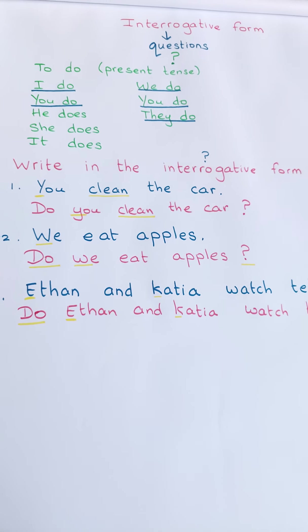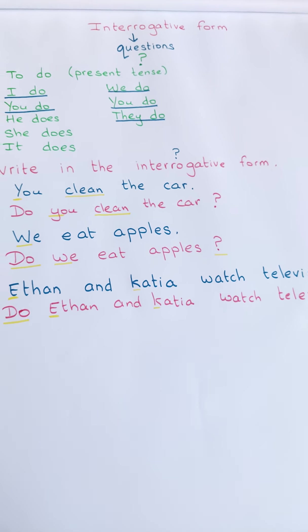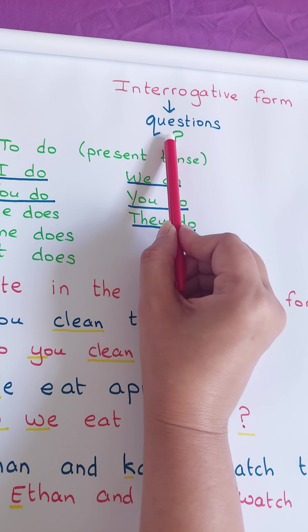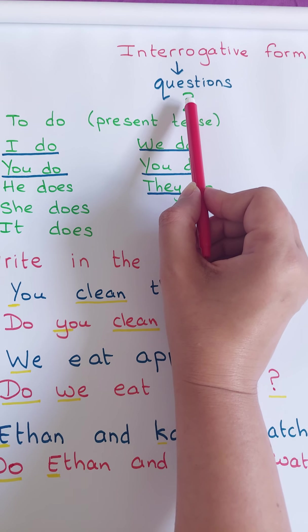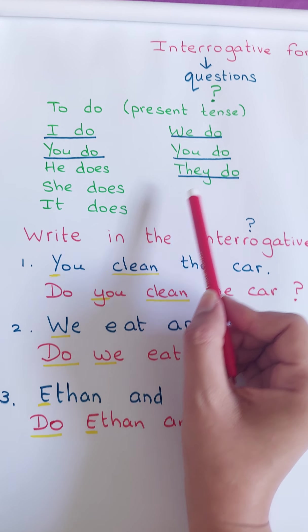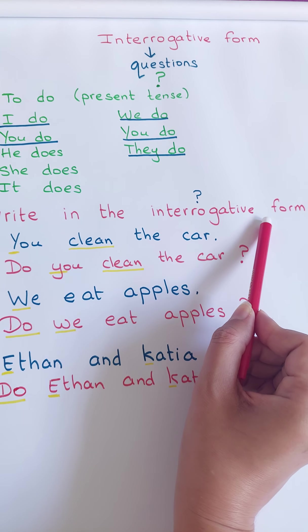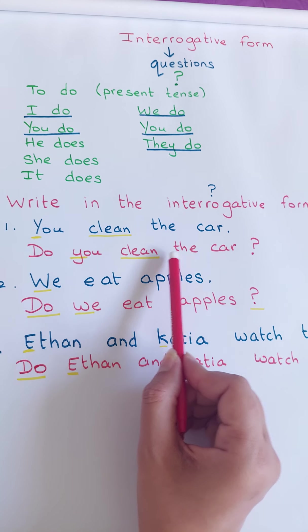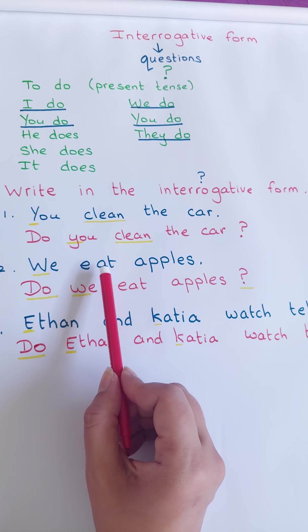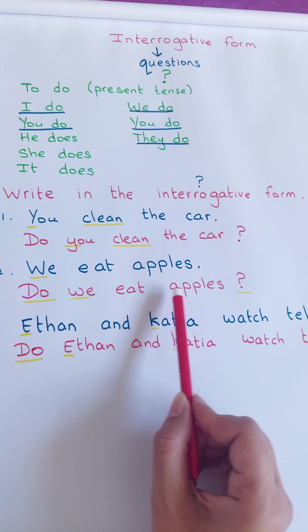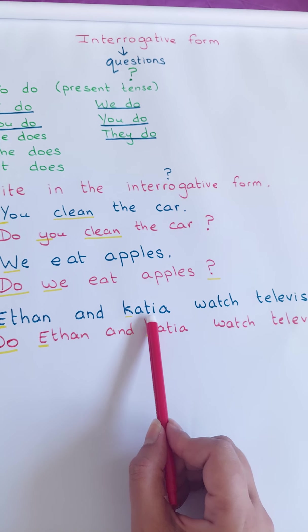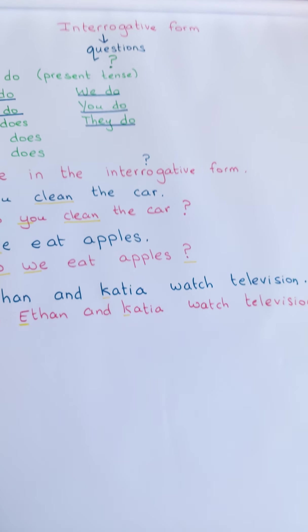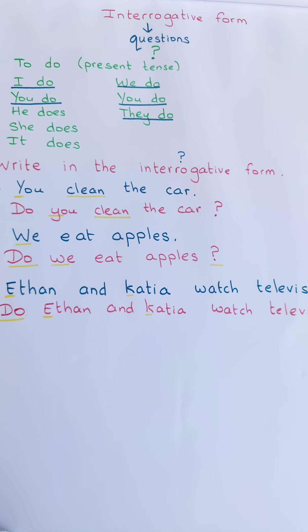Maintenant, je vais vous envoyer un petit devoir. Vous allez travailler et m'envoyer sur WhatsApp. Et avant, je vais récapituler un petit coup pour vous. Donc, le interrogative form, ce sont des questions. On va faire des questions et on va mettre le question mark, le point d'interrogation. Quand on vous dit write in the interrogative form, on va faire une question. Très bien, les enfants. Allez, je vous envoie le devoir. Vous m'envoyez sur WhatsApp. Bye bye.